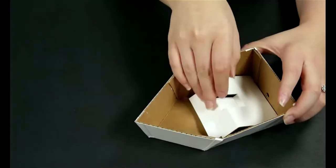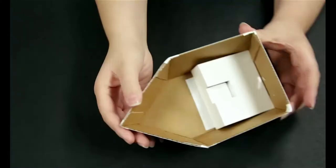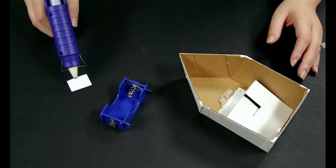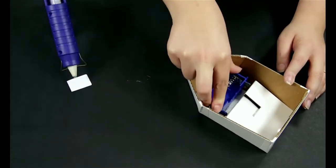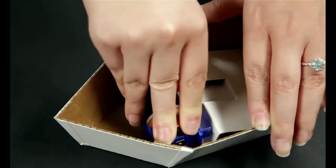Glue and or tape it to the back of the boat's hull. Put the D-cell battery into the battery holder and hot glue it to the bottom of the boat.